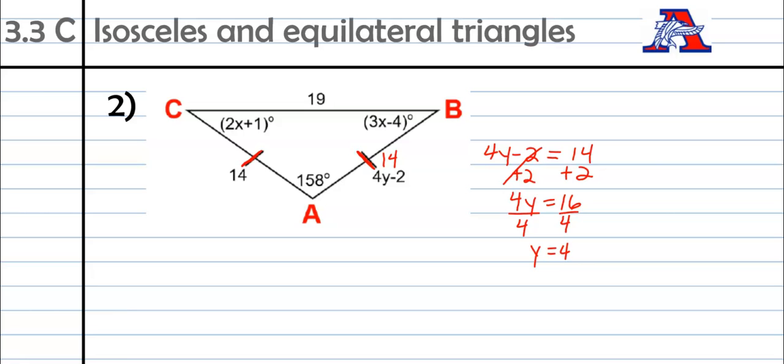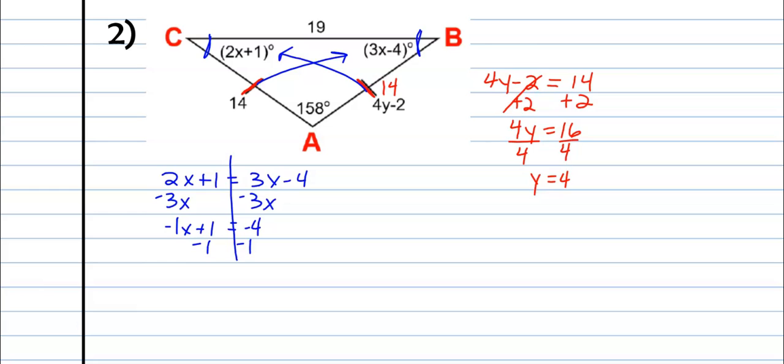And the hint here is that across from these congruent sides, we are finding congruent angles. So I don't know what these angles are yet. I do know that they have to be equal to each other. So one way to do it, there are a couple different ways to do this problem. But one way is to just do 2X plus 1 is equal to 3X minus 4. And so solve it that way. So I'm going to subtract 3X. I'm going to get negative 1X plus 1 equals negative 4. Subtract 1. Negative 1X equals negative 5. Divide by negative 1. And X is 5.